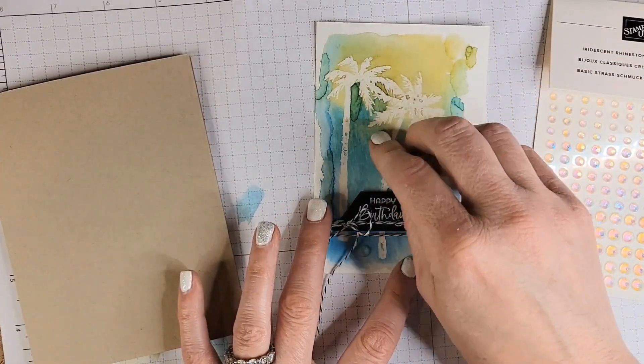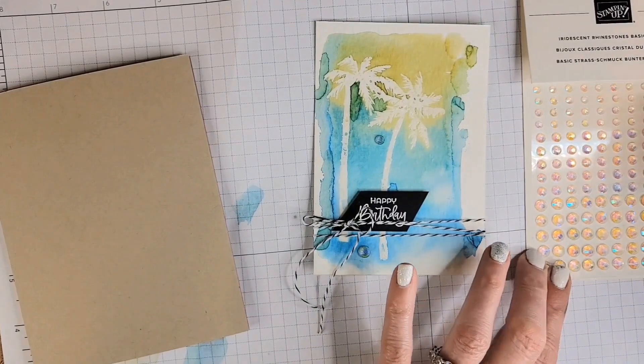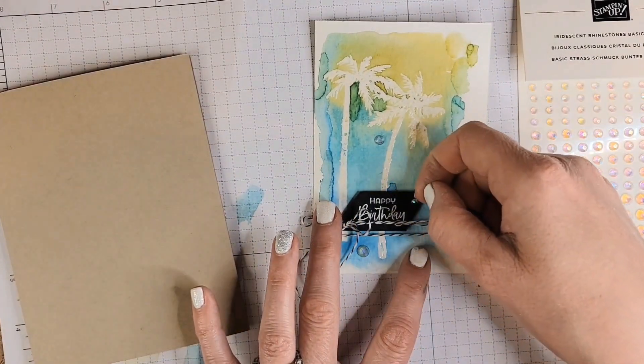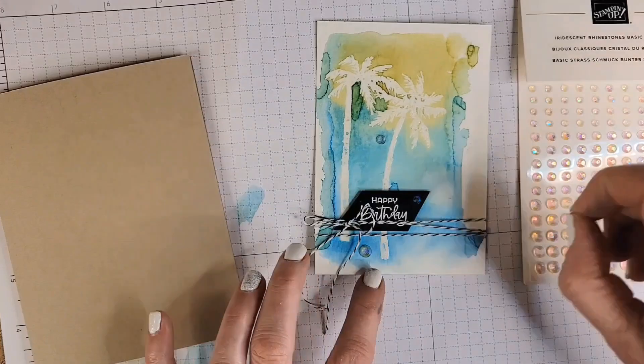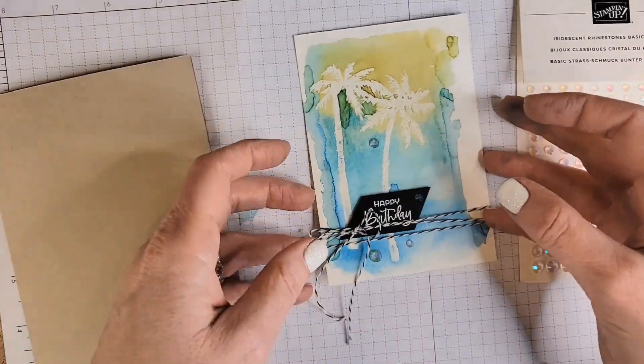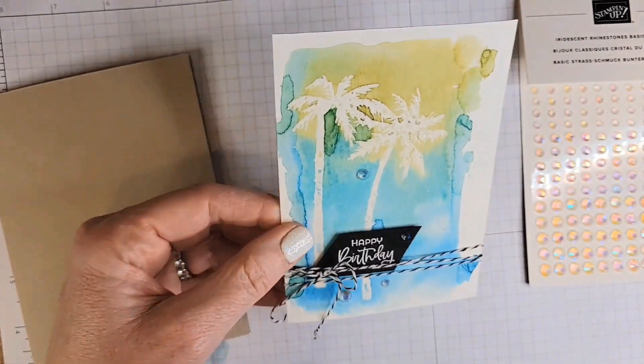Let's see. I'll put one up here and let's add one to the black and one more down there. Now we're ready to add this to our card.